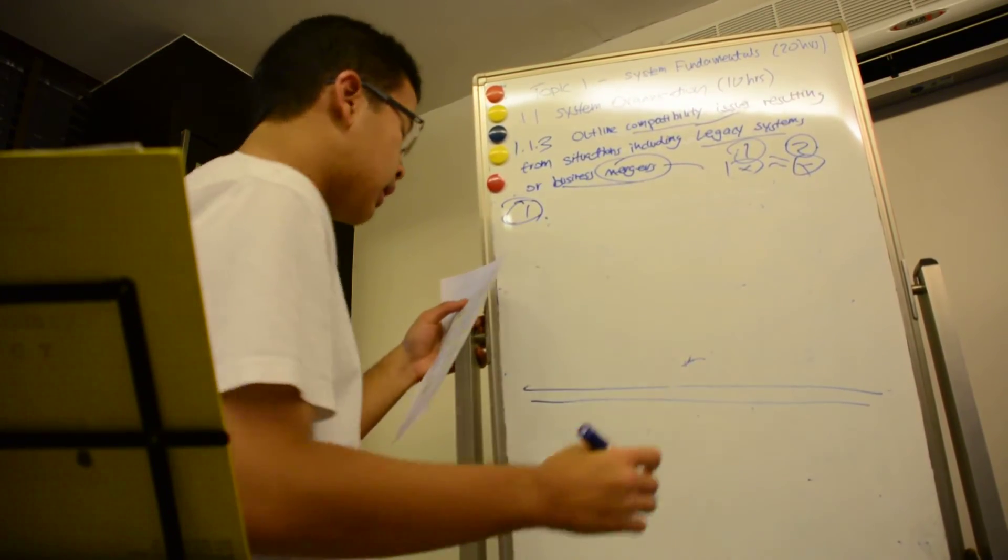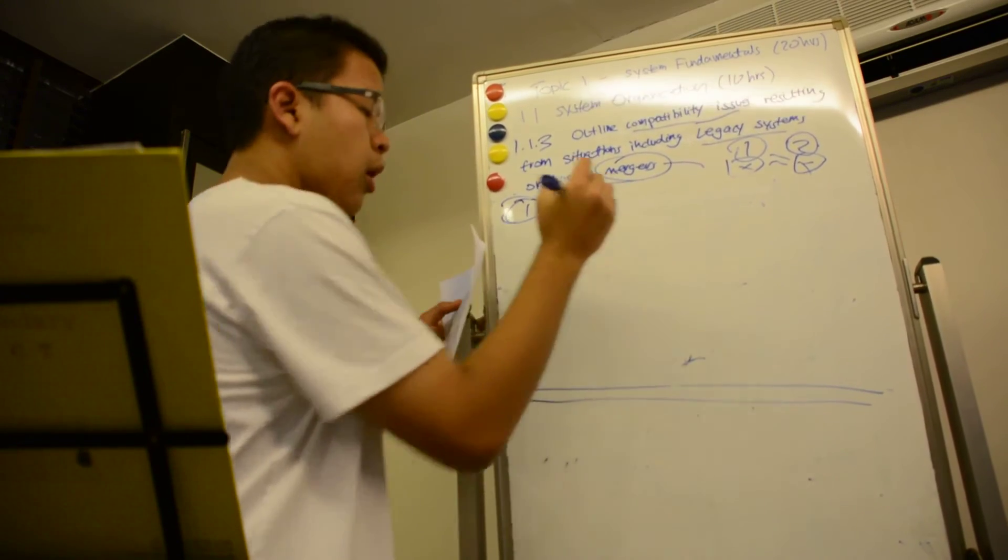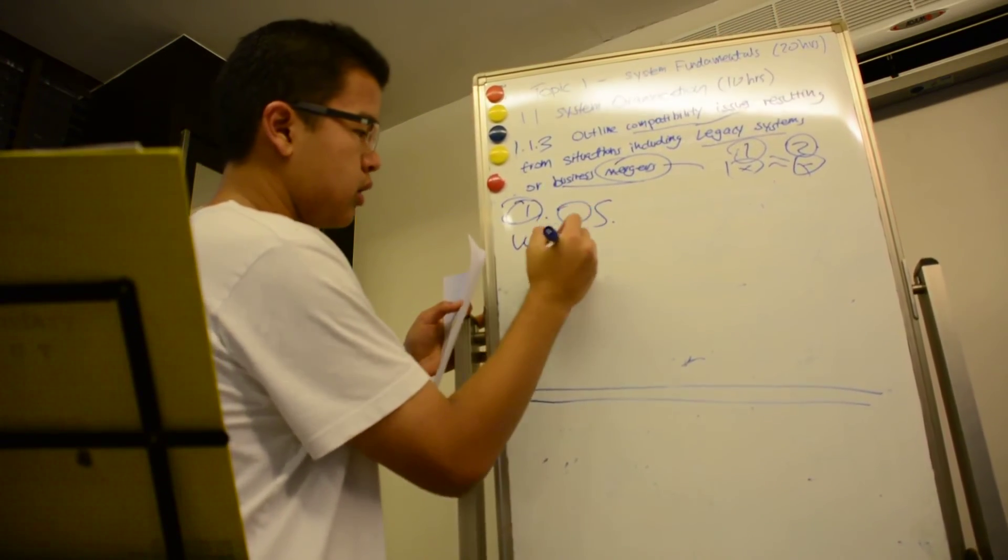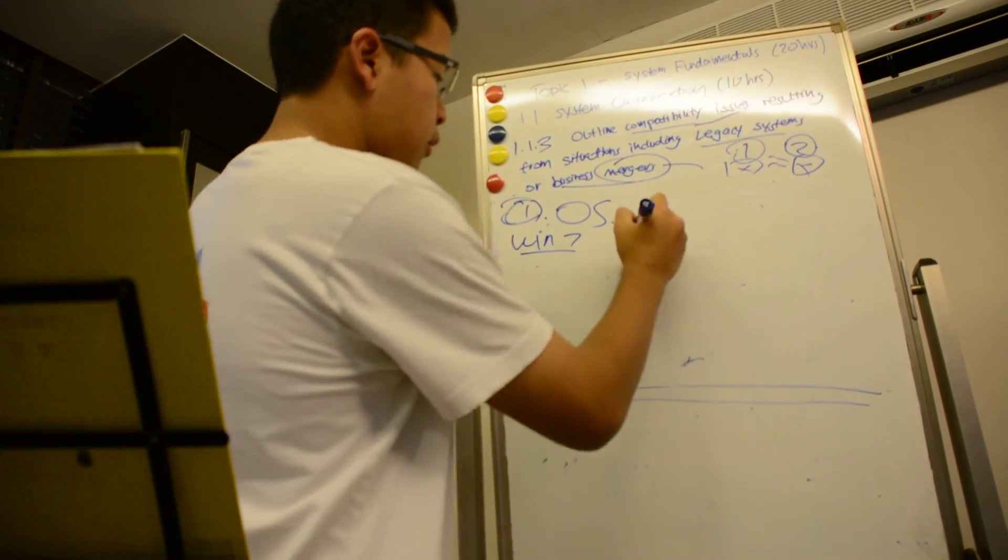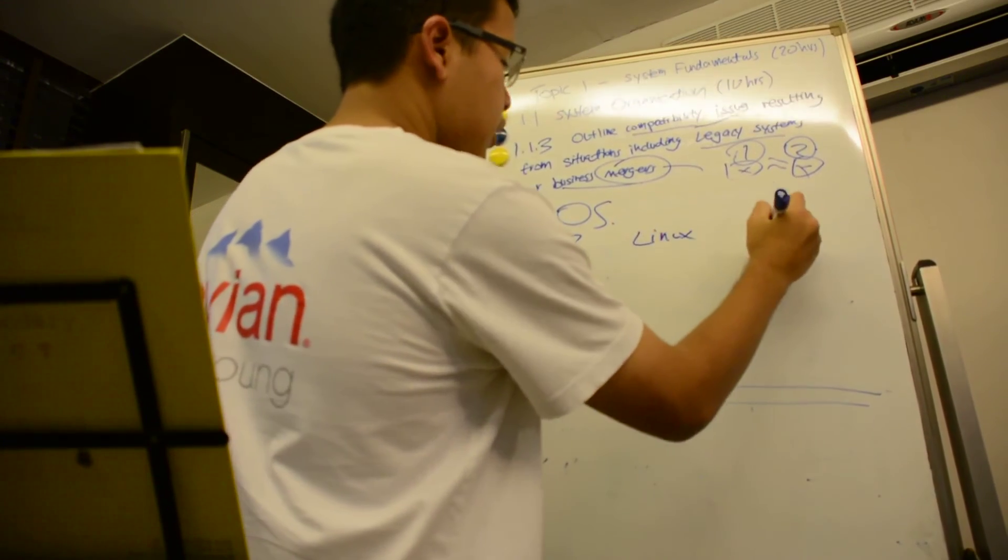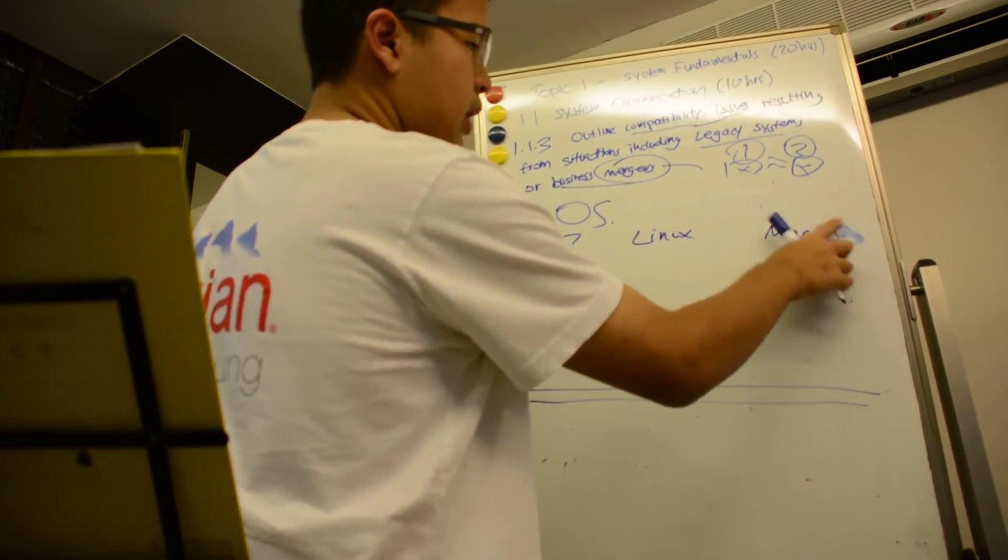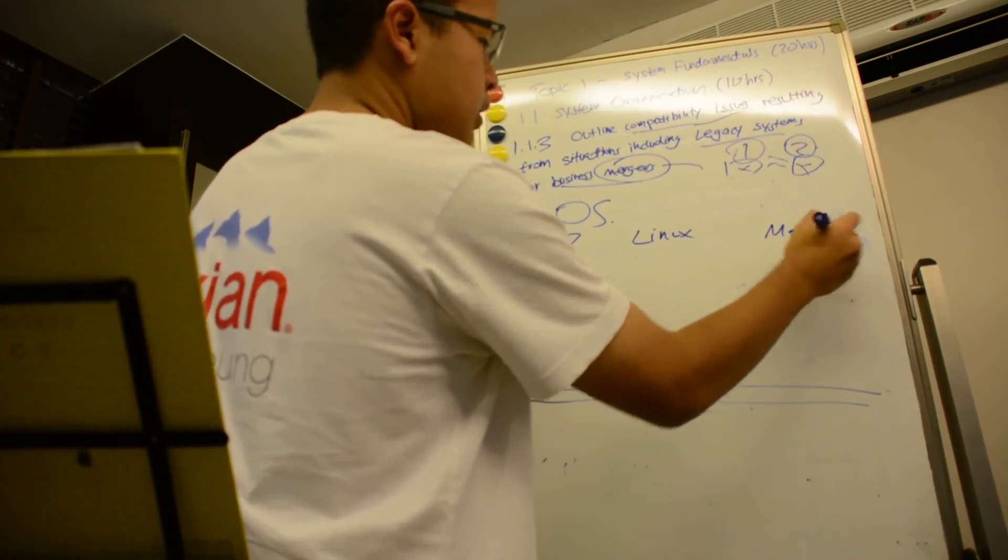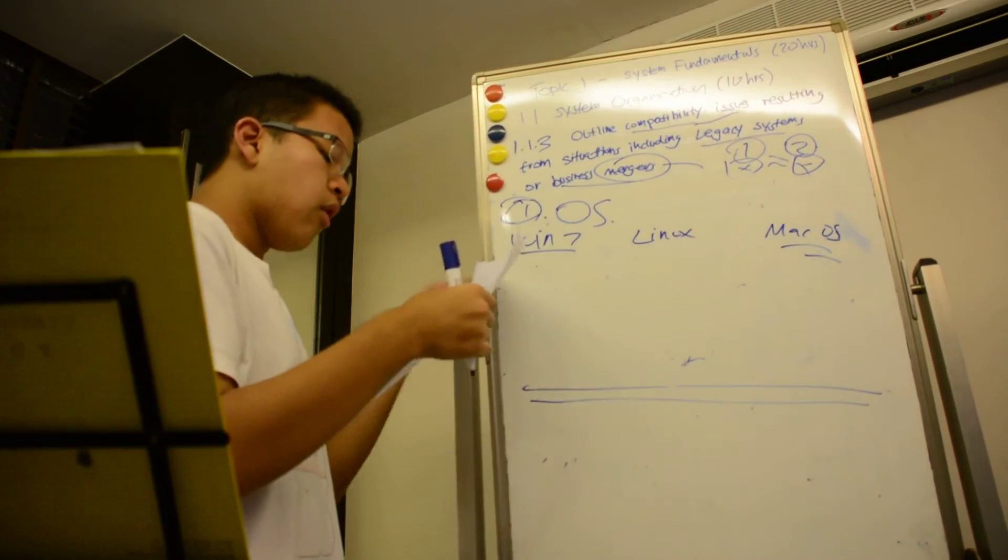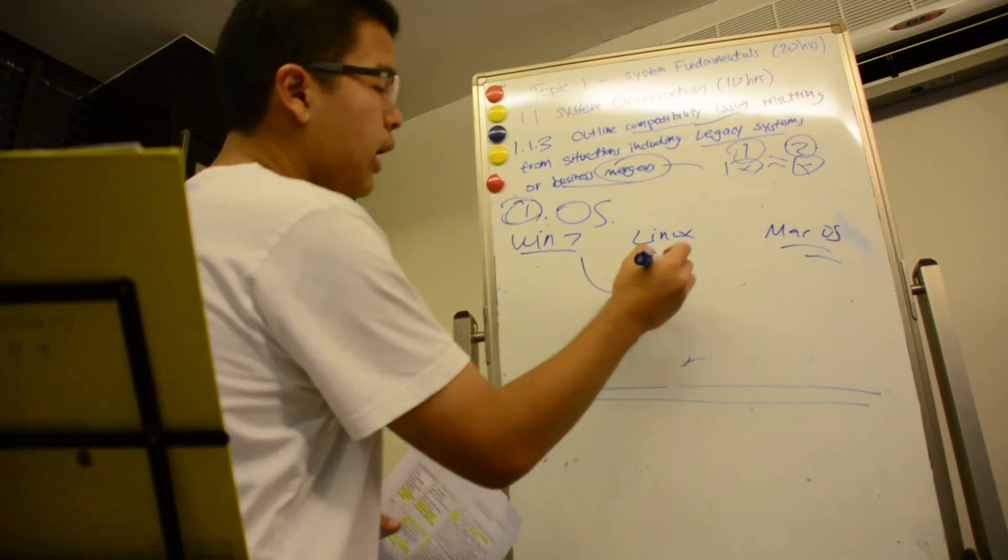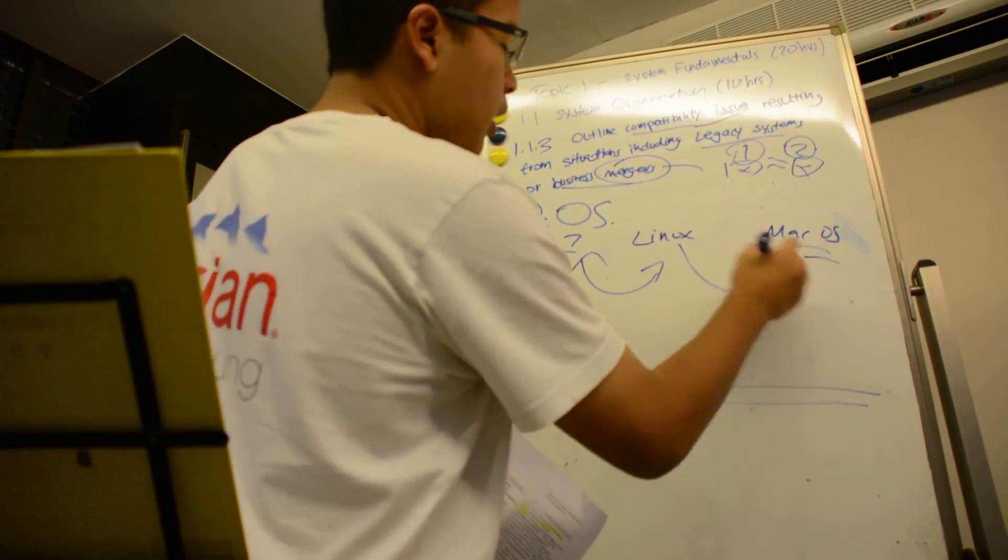One common example of compatibility issues is OS operating system. Let's say there's Windows, Windows 7, we have Linux, and you have Mac OS X. So these are sometimes incompatible.